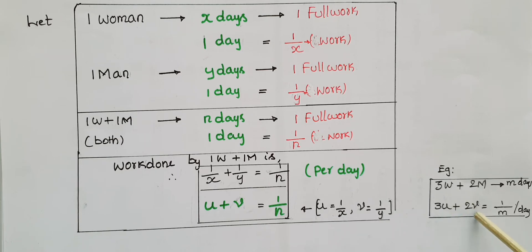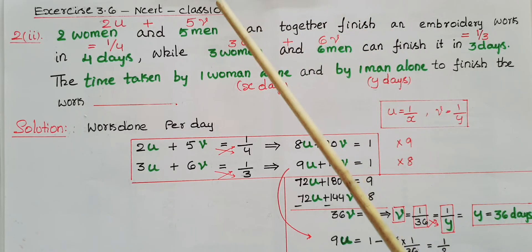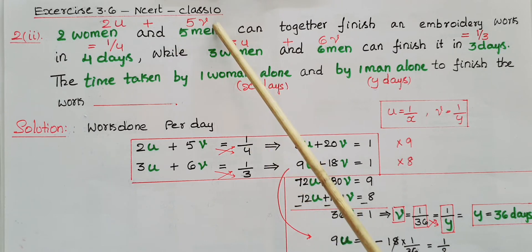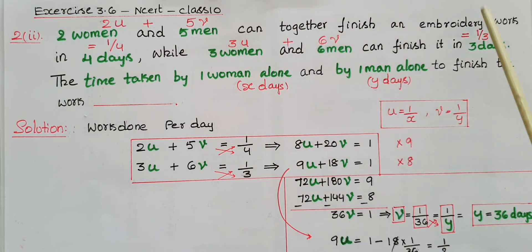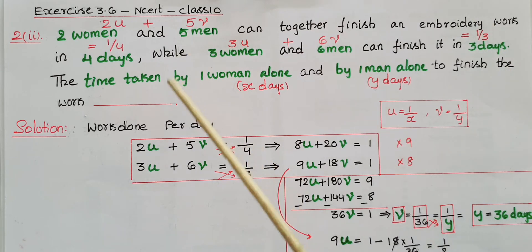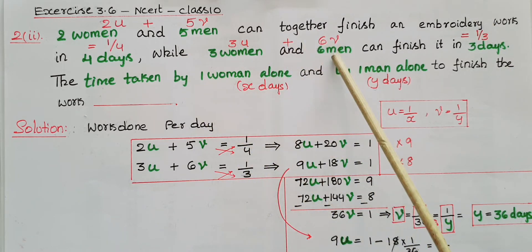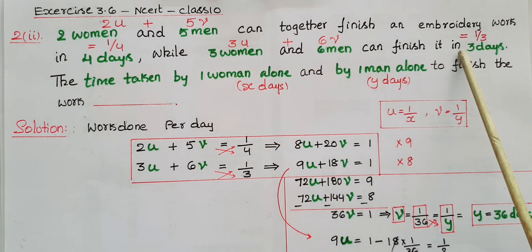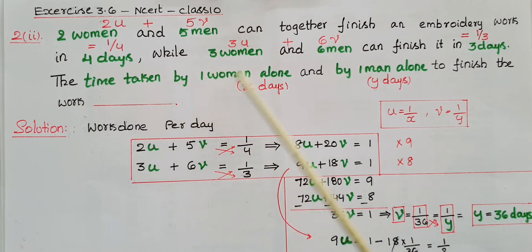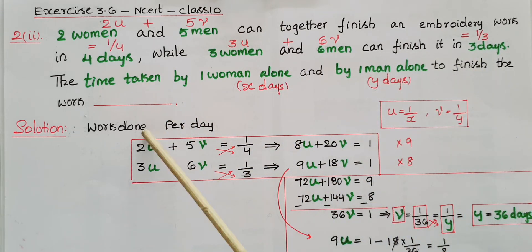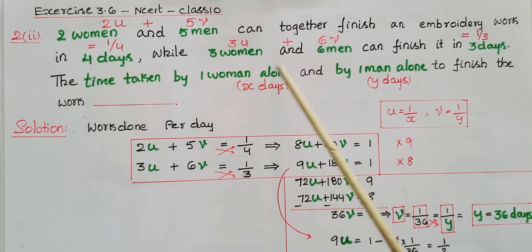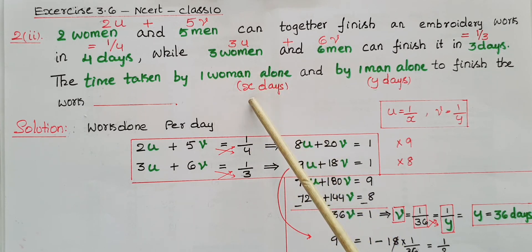This is the second problem from Exercise 3.6 of NCERT Class 10: Two women and five men can together finish an embroidery work in four days, while three women and six men can finish it in three days. Find the time taken by one woman alone and by one man alone to finish the work. Let the time taken by one woman alone be x days and by one man be y days.